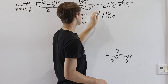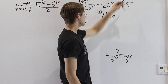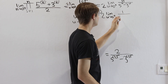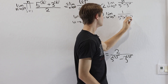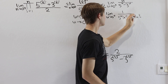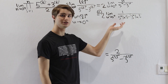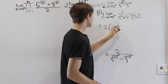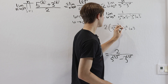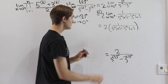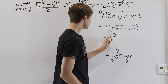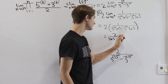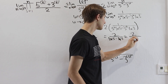By L'Hôpital's rule, we take derivatives of numerator and denominator. The derivative of u is 1; the derivative of 5^u − 3^u is 5^u ln 5 − 3^u ln 3. Plugging in u = 0: we get 2 times 1 over (1·ln 5 − 1·ln 3) = 2 over (ln 5 − ln 3) = 2 over ln(5/3).